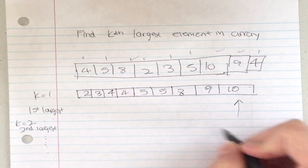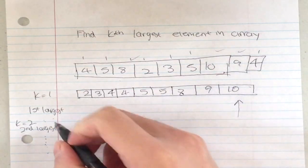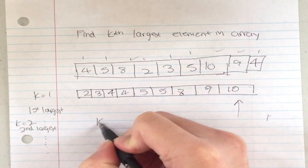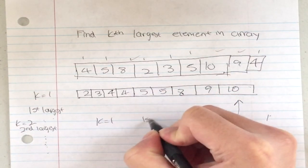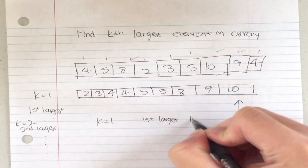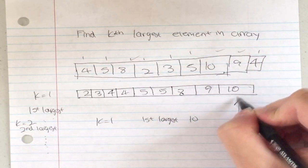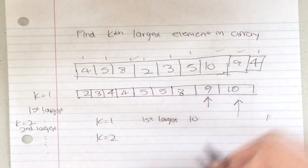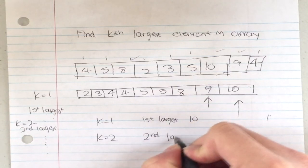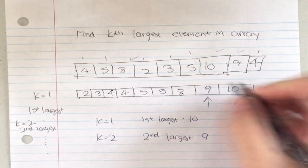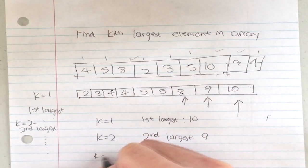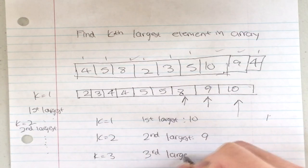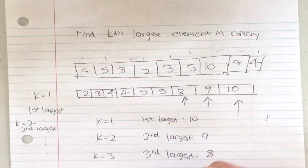After sorting, the kth largest element is always near the end. If k equals one, the first largest is ten; if k equals two, the second largest is nine; if k equals three, the third largest is eight.